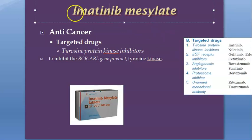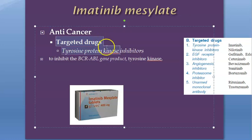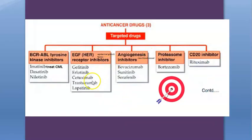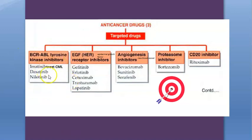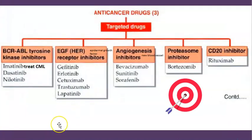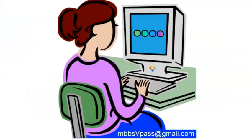In this video we want to look at imatinib mesilate. This is an anti-cancer drug coming under the category of targeted drugs. If you go back to your pharmacology, you have many types of anti-cancer drugs - cytotoxic drugs etc. - but imatinib is a targeted drug. It is a BCR-ABL tyrosine kinase inhibitor and a targeted anti-cancer drug used to treat CML, that is chronic myeloid leukemia.